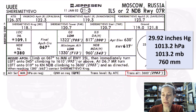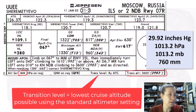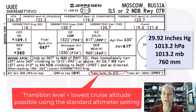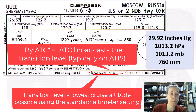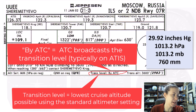We also see something interesting here: the transition level says 'by ATC.' Transition level by ATC means ATC should broadcast this, typically on ATIS — you would have to know what that was per ATIS. And that is much different than the U.S.